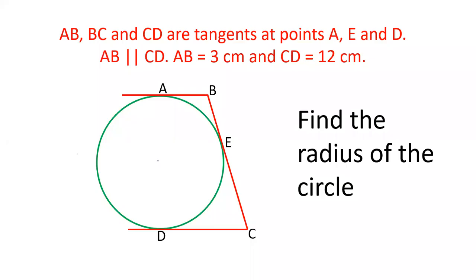Hello friends, welcome to our YouTube channel SSC Selector. In today's video, there is a question: there is a circle and there are two parallel tangents AB and CD, and BC is also another tangent touching the circle at point A. It is given that the length of AB is 3 and the length of CD is 12, and we have to find out the radius of this circle.